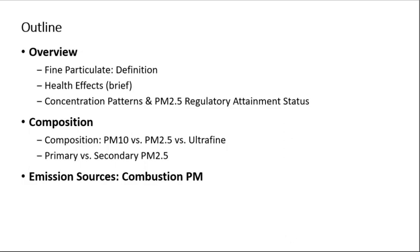The outline of this lecture is as follows. We will first give an overview. We will summarize fine particulate and briefly summarize the health concerns of fine PM exposure. More details on health effects will be provided in Module 4 during our study of air pollution epidemiology. We will also look at concentration patterns and the attainment status of PM2.5 pollution locally, across the U.S., and globally. We will then go into further details on PM composition. We will distinguish between PM10, PM2.5, and ultrafine particulate, highlighting the compositional aspects of each. We will also distinguish between primary versus secondary PM2.5. We will then conclude by briefly describing main emission sources of PM generated by combustion sources.